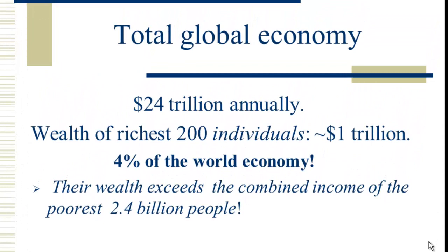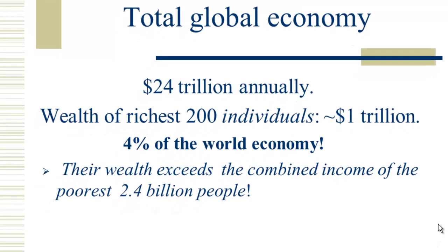If we look at the global economy and money — which we say is the root of all evil — it seems to be a measure of all of these things. The global economy amounts to $24 trillion in gross global production. And if we look at the wealth of the richest 200 individuals in the world, it's roughly a trillion dollars — 4% of the world economy in the hands of 200 individuals, and nothing like that has ever existed before. If we compare their wealth to the combined income of the poorest 2.4 billion people, their wealth is greater.